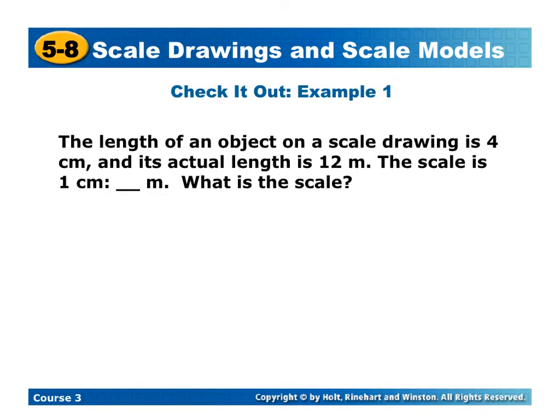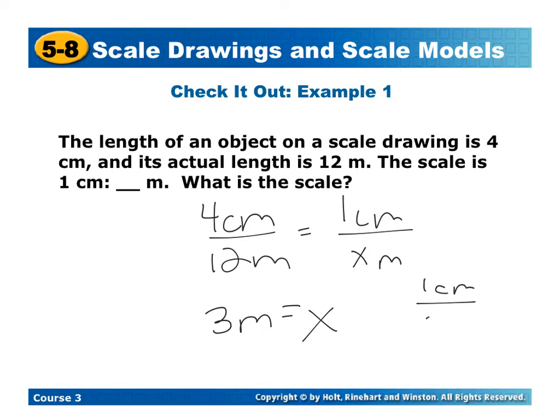So now it's your turn to find the scale. Why don't you pause the video and see if you can figure out the scale for this one. The length of an object on the drawing is 4 centimeters, and its actual length is 12 meters. We want to know what the scale drawing is if we start with 1 centimeter. So if we cross multiply, we have 12 times 1 is 12, divided by 4 is 3. So 3 meters is equal to our x. So it's going to be 1 centimeter to 3 meters is our scale factor.